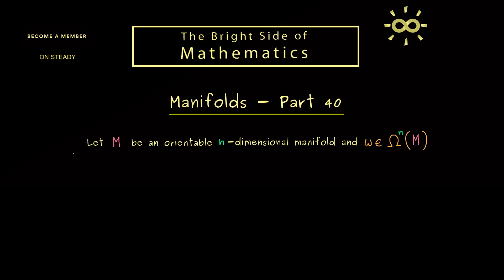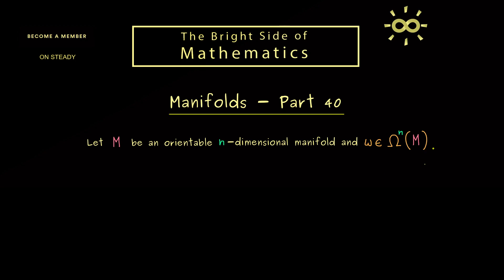Let's recall what we did in the last video. There we took an n-dimensional orientable manifold and a volume form on it. Then in order to start with the integral for the whole manifold, we started with a single chart. And since we want to define an orientable integral, this chart should also preserve the orientation — something we discussed a lot when we talked about orientable manifolds. All charts we consider are orientation preserving.